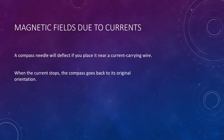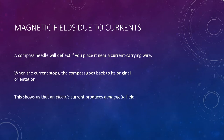A compass needle will deflect if you place it near a current-carrying wire. This is something a little more behind the scenes than what you would see from our previous lecture. We have a direct connection between electric current and magnetism. When the current stops, a compass will go back to its original orientation, typically north to south. When you turn the current on, you get a deflection in your needle; when you turn it off, it goes back.